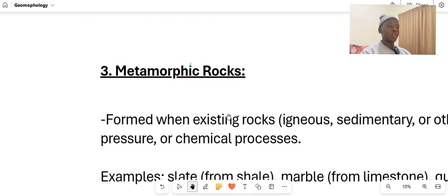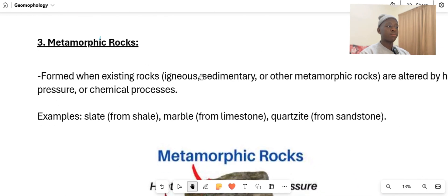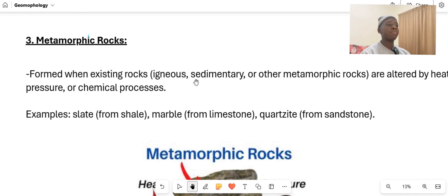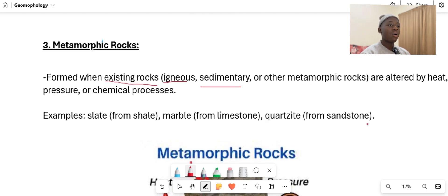We move into the third type of rock, which is the last one, the metamorphic rock. The metamorphic rock is formed when existing rock, such as igneous rocks and sedimentary rock or all other types of rock, are altered by heat, pressure, or chemical processes.